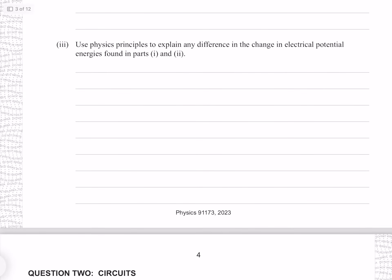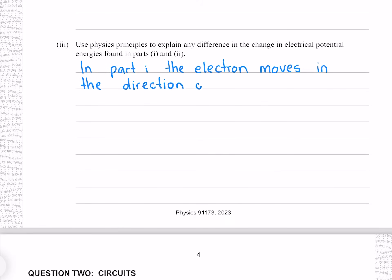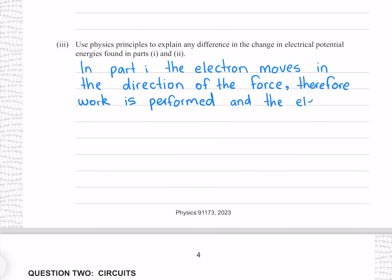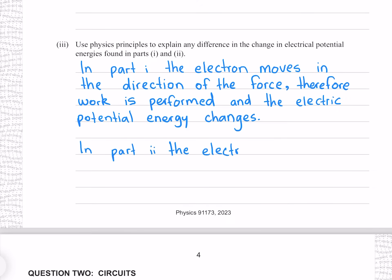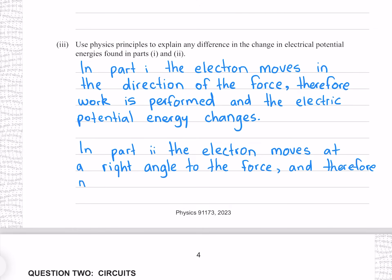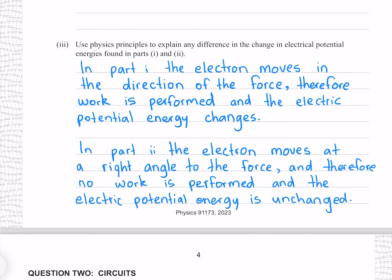Use physics principles to explain any differences in the change in electric potential energies found in parts I and II. In part I, the electron moves in the direction of the force, therefore work is performed and the electric potential energy changes. In part II, the electron moves at a right angle to the force and therefore no work is performed, and the electric potential energy is unchanged.